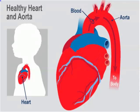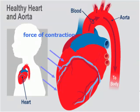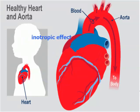The heart needs additional power to pump all the blood — this is what we call the force of contraction. If we need the heart to pump more blood, we need to increase the force of contraction, and that is what we call inotropic effect. Positive inotropic effect means increasing force of contraction; negative inotropic effect means decreasing force of contraction.